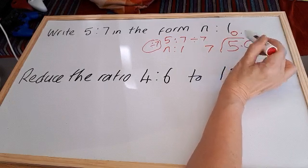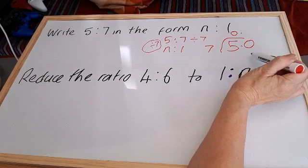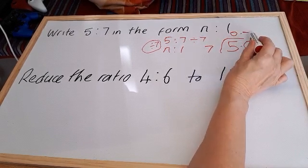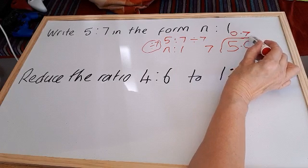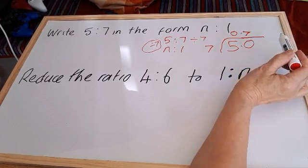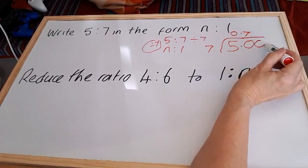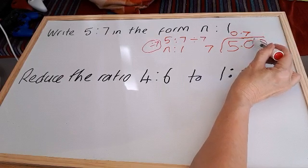So we'll put a 0 here and we'll say 7 into 50. Well, if we know our squares, we'll know that 7 times 7 is 49. So we'll put a 7 there because 7 times 7 is 49. But we've got 1 left over. So we'll put a 0 down and put our 1 there.